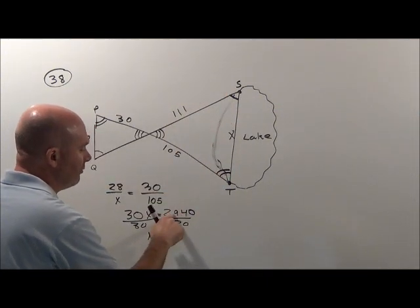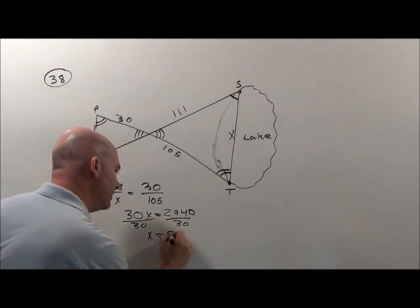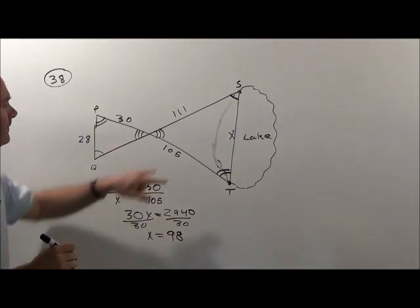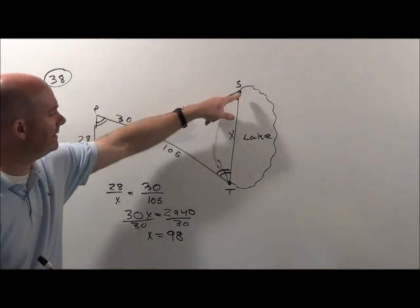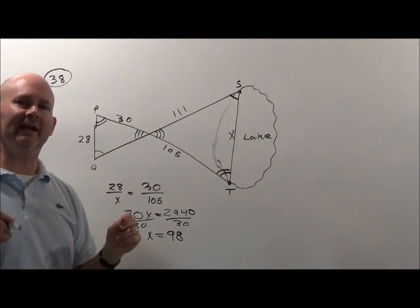30 goes into there. If that were 3000, that would be 100. Go back to it. That's going to be 98. That missing, that width that was missing is going to be 98.